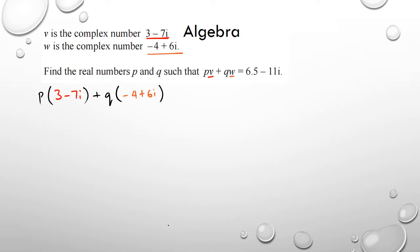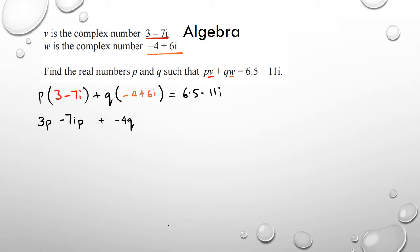That's all equal to 6.5 minus 11i. Expanding this out I'm going to get 3p minus 7ip plus negative 4q plus 6iq.